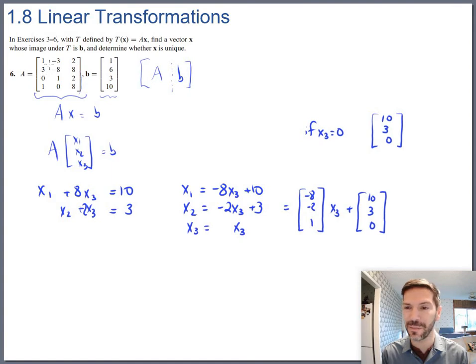And you can double check that. Let's just check the top entries at least. 10 of this would be 30 minus 24 and 0 of that. It does make 6. 0, 3, 0, that makes 3. And 10 of that, none of that, none of that, it makes 10. So it looks good.